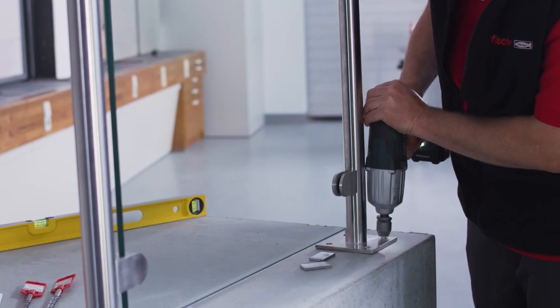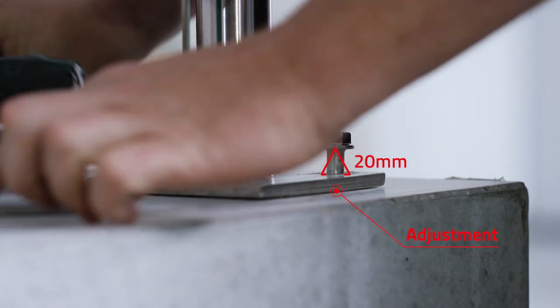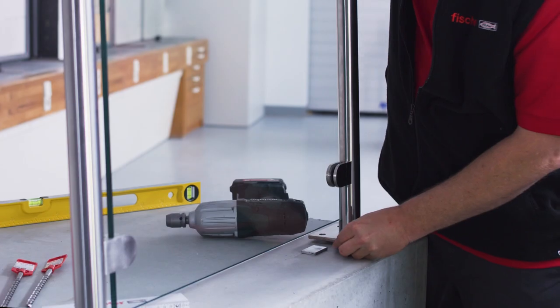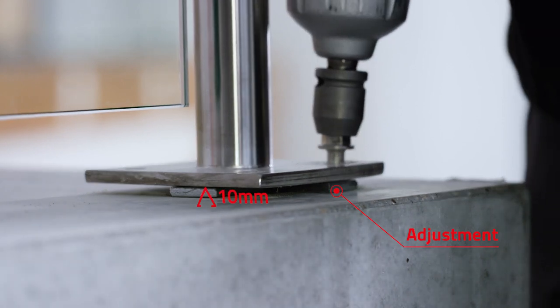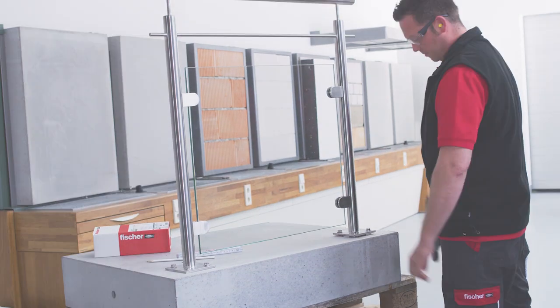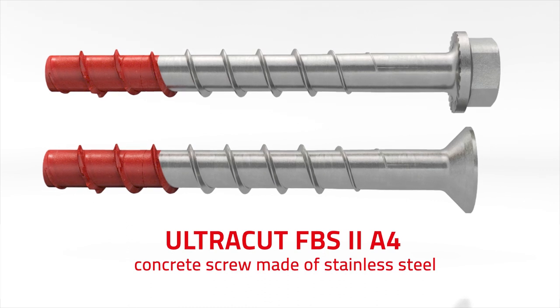The Ultracut FBS2 can be unscrewed twice for a total length adjustment of 20mm. Place a maximum 10mm packing below the base plate, enabling the fixture to be adjusted exactly.